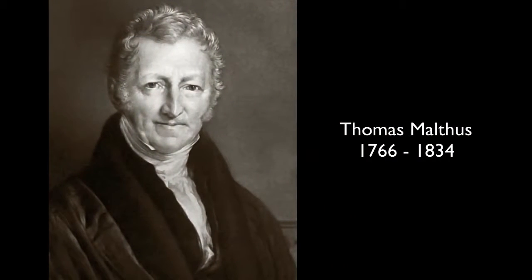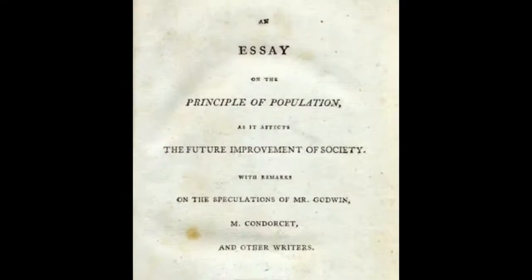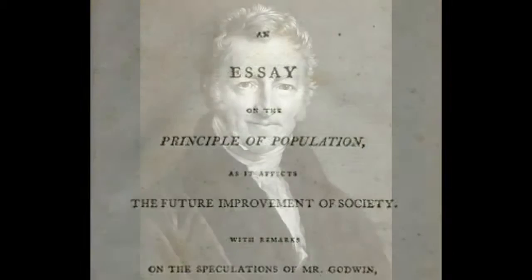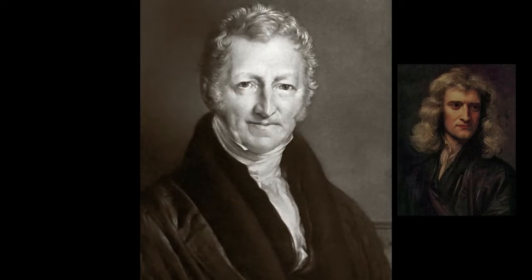Thomas Malthus was a political economist and Enlightenment thinker who observed a growing population with increasing concern. To explain poverty and famine, he wrote a famous essay at the end of the 18th century entitled An Essay on the Principle of Population. In good Enlightenment fashion, he was trying to find natural laws, similar to Newton's law of gravity, that could explain the continuing existence of poverty in the world.